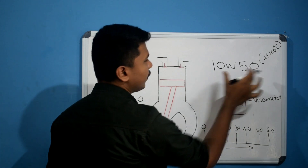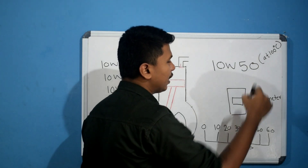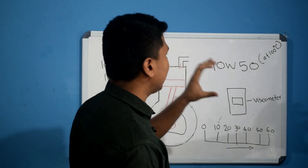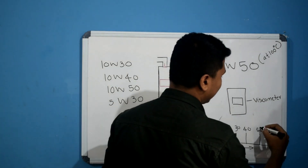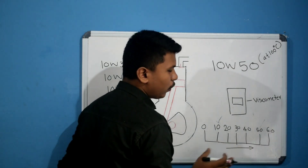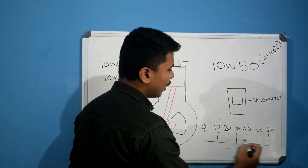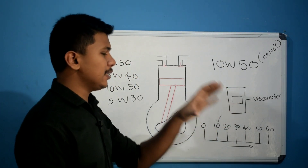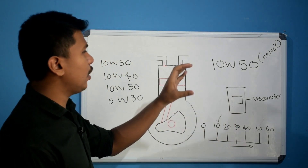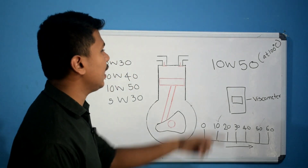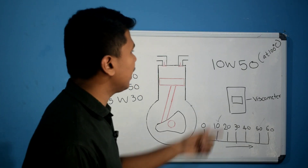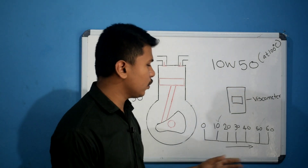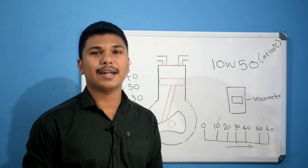In a 10W-50 engine oil, the viscosity reading at cold temperature is 10, and the viscosity reading at 100 degrees Celsius is 50. So the grade tells you both the cold-temperature viscosity and the hot-temperature viscosity of the oil. As temperature increases, viscosity decreases, and as temperature decreases, viscosity increases — this is the opposite characteristic of engine oil.